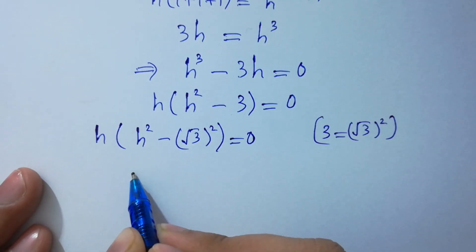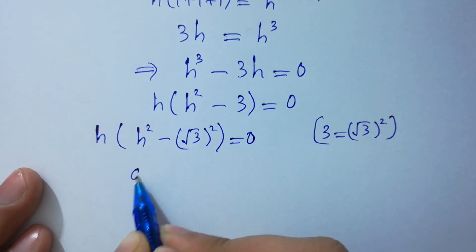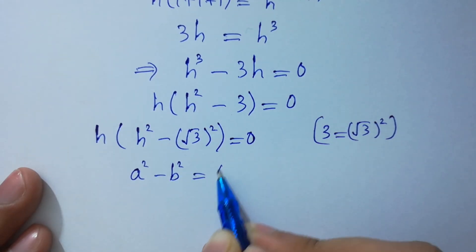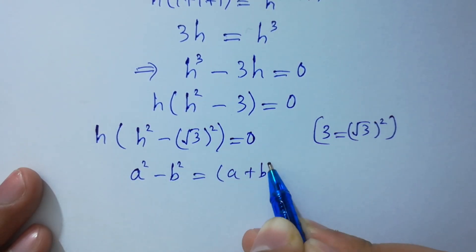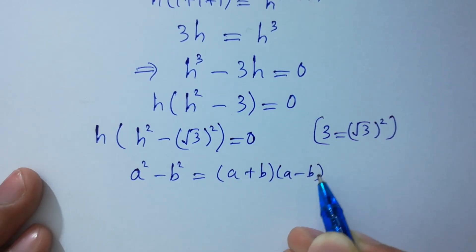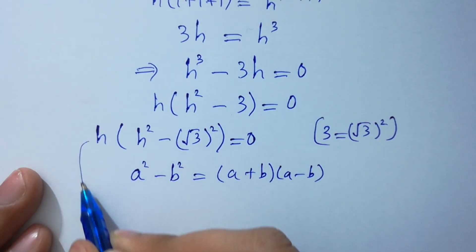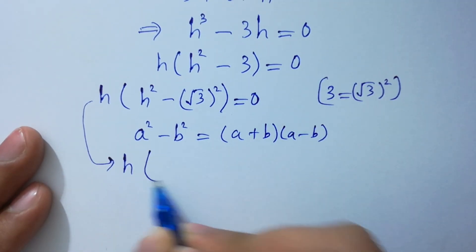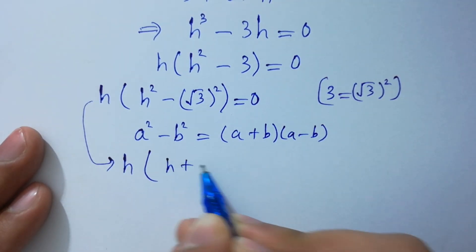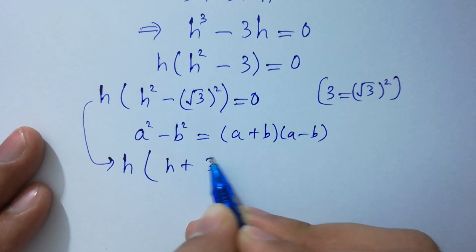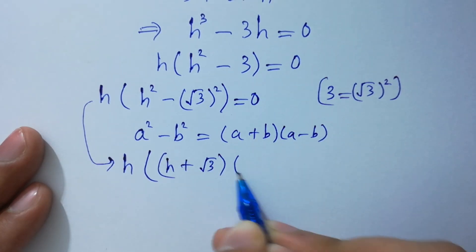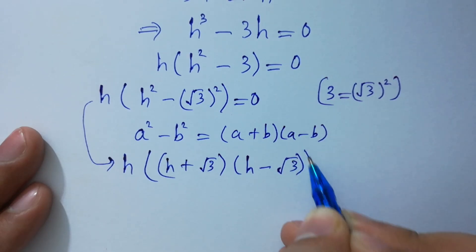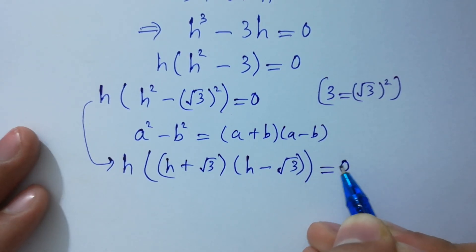As we know that a squared minus b squared equals (a plus b)(a minus b), so h times (h squared minus square root of 3 squared) factors as h times (h plus square root of 3) times (h minus square root of 3) equal to 0.